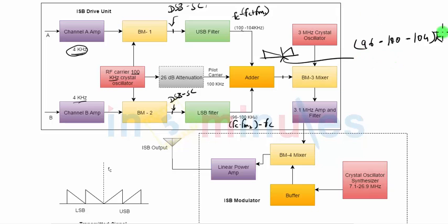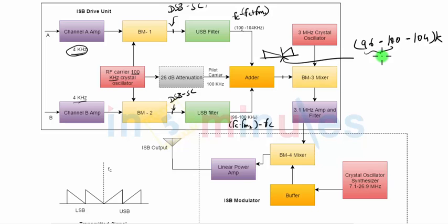The entire signal will now be spread across a frequency band of 96 kHz to 104 kHz, out of which the lower sideband represents the signal coming from channel B, and the upper sideband represents the signal coming from channel A.